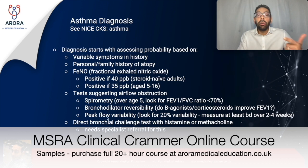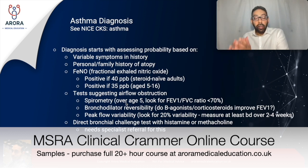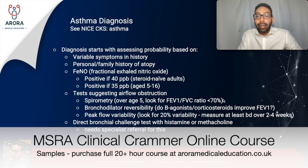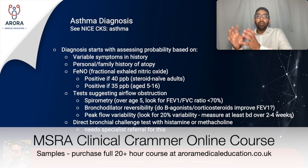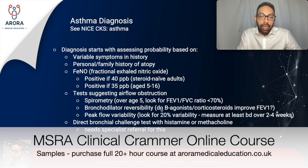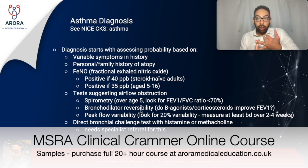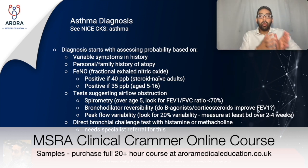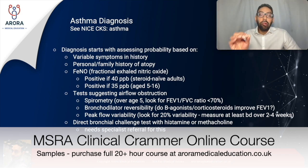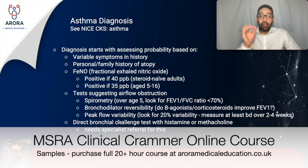The three tests suggesting airflow obstruction are spirometry, bronchodilator reversibility, and peak flow variability. For spirometry, the patient must be over age five; you're looking for an FEV1/FVC ratio of less than 70%, which would increase the probability of asthma. Bronchodilator reversibility means giving a beta-agonist or corticosteroid and checking whether FEV1 improves — if it does, this pushes the probability of asthma higher.